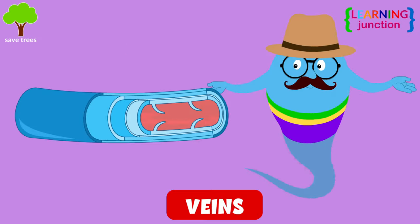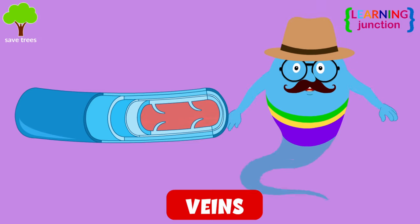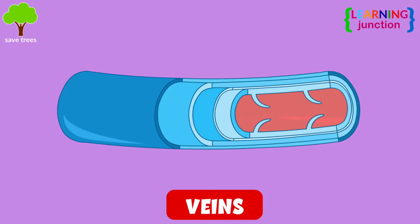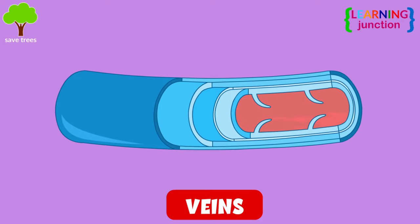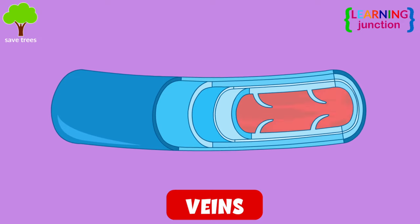Veins carry the deoxygenated blood to the heart. In the heart, it is directed towards the lungs to receive oxygen.